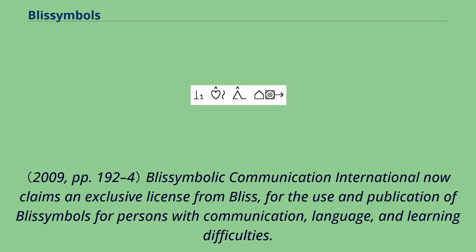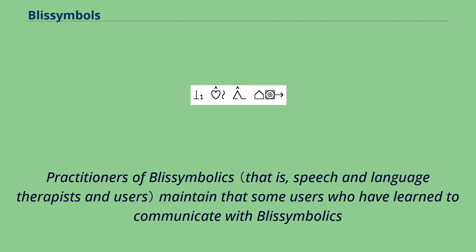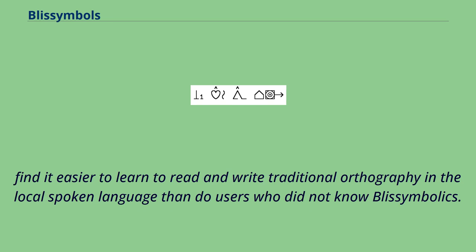Bliss Symbolic Communication International now claims an exclusive license from Bliss for the use and publication of Bliss Symbols for persons with communication, language, and learning difficulties. The Bliss Symbol method has been used in Canada, Sweden, and a few other countries. Practitioners of Bliss Symbolics maintain that some users who have learned to communicate with Bliss Symbolics find it easier to learn to read and write traditional orthography in the local spoken language than do users who did not know Bliss Symbolics.